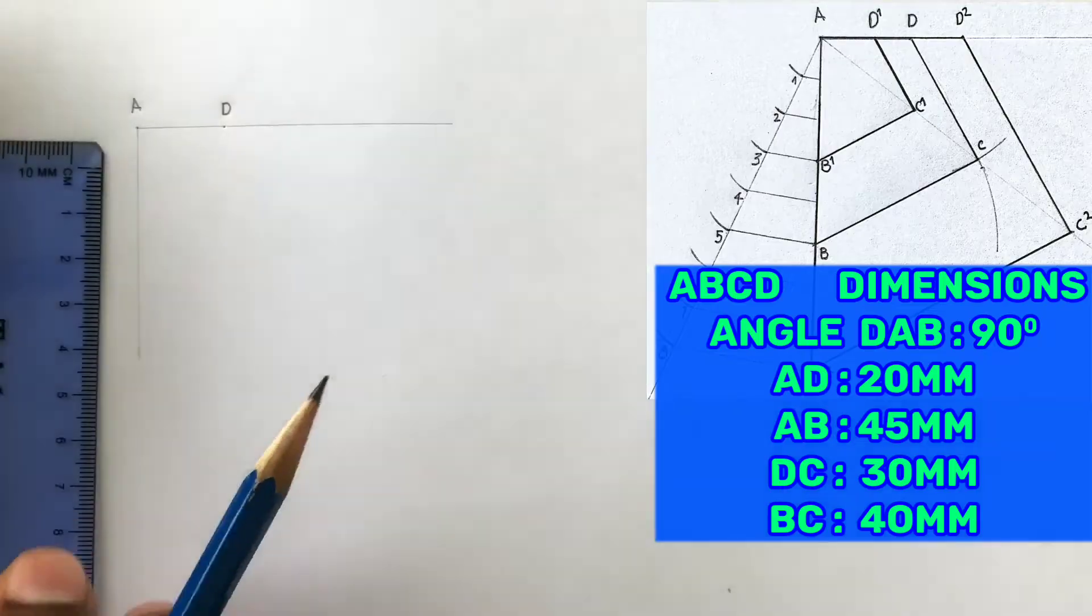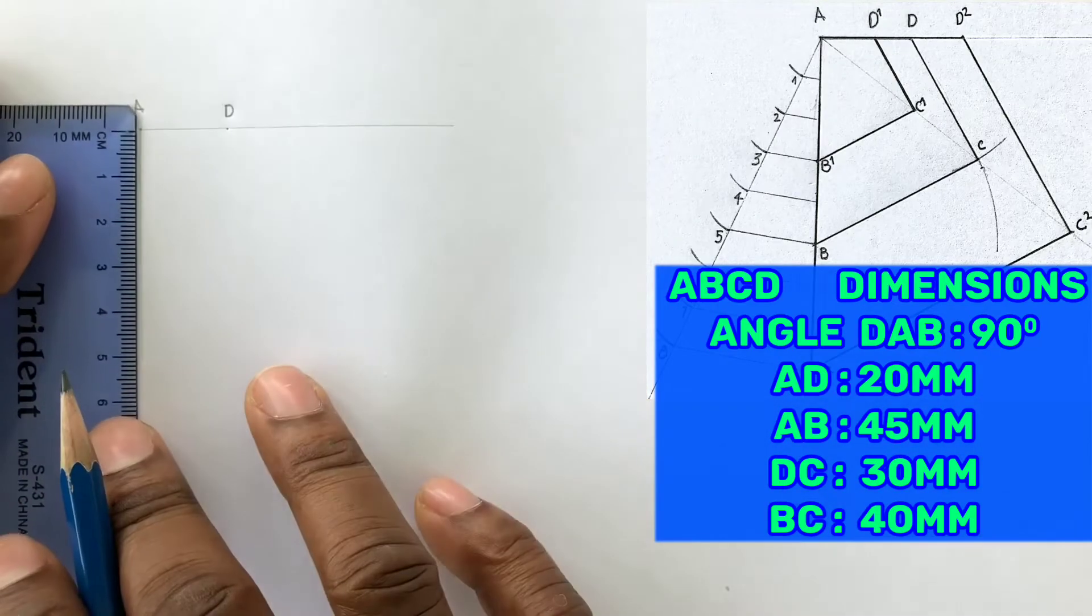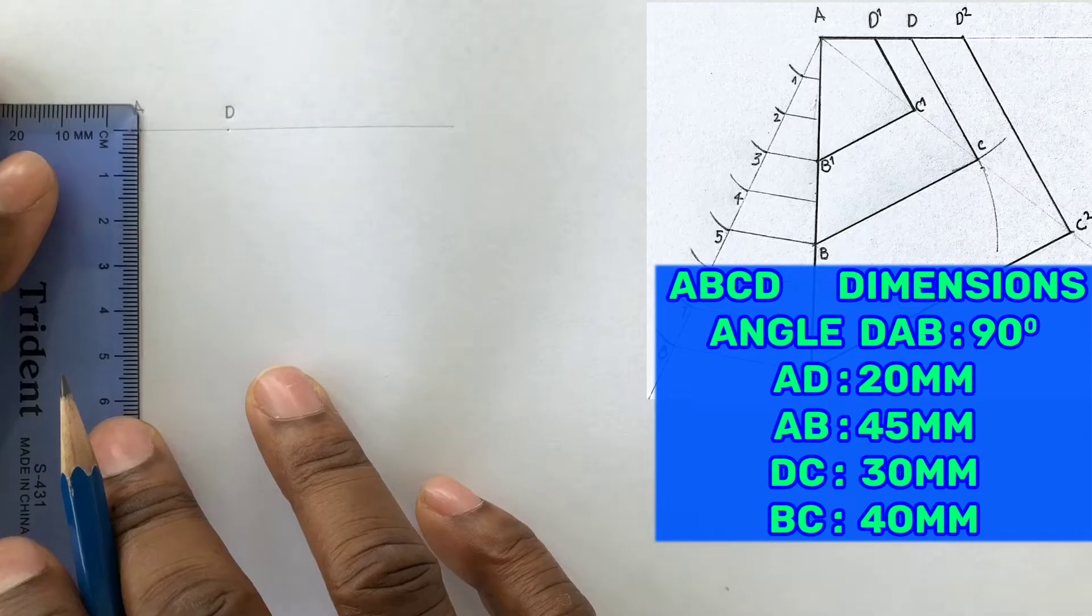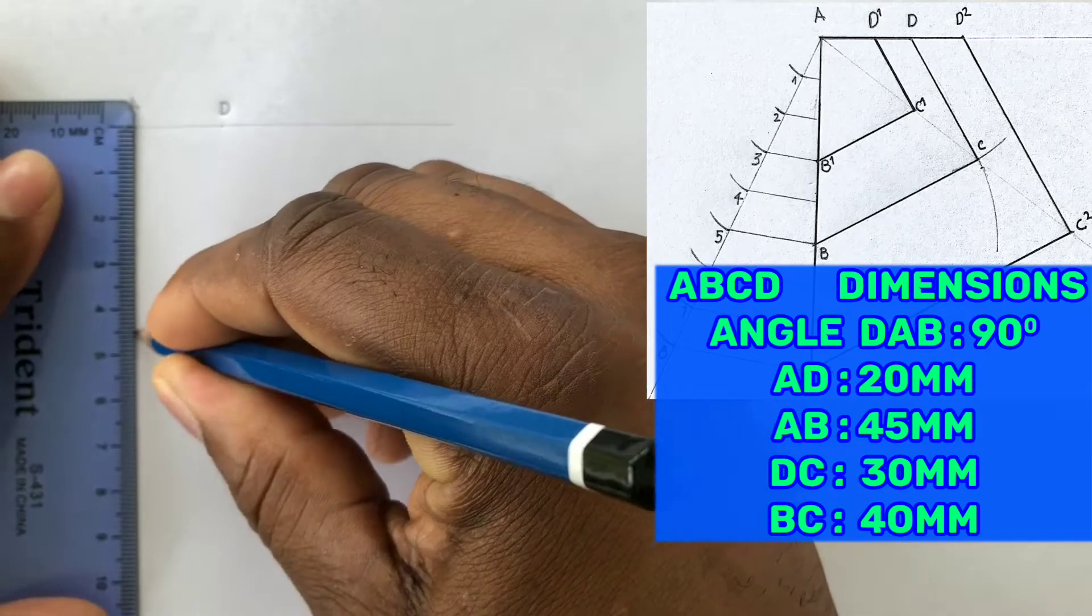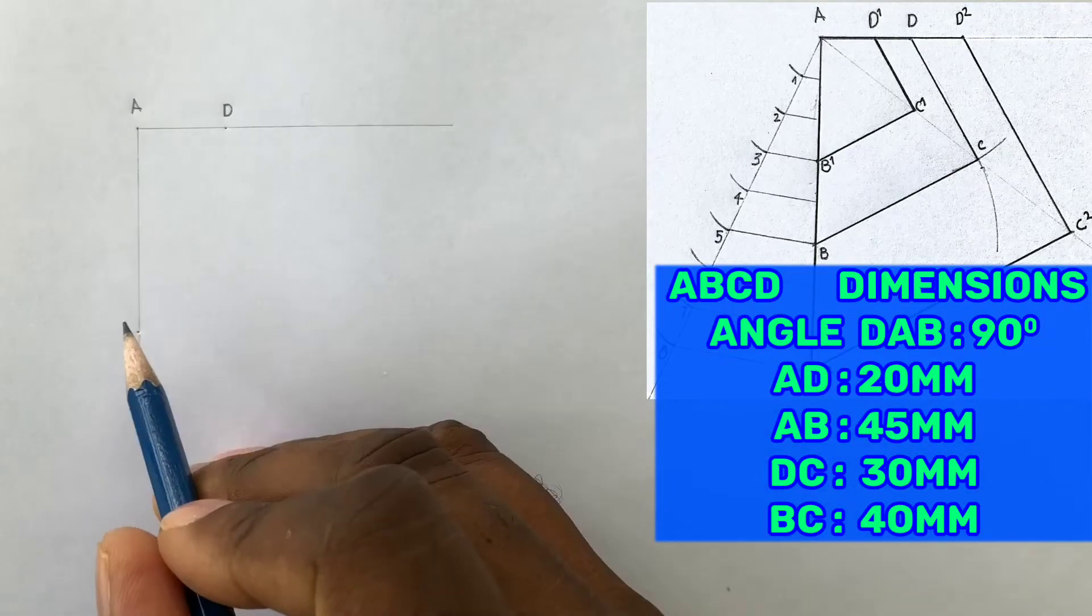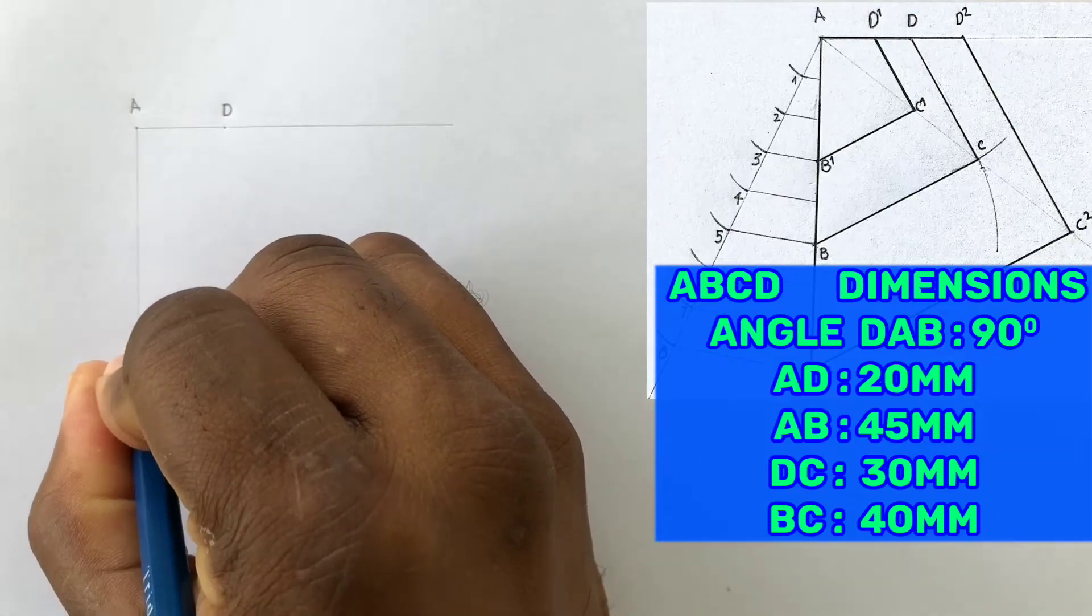On the vertical line from point A, you will now measure 45 millimeters. Label this point as B.